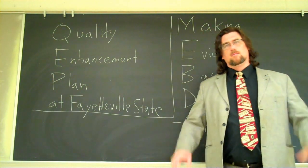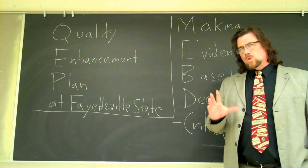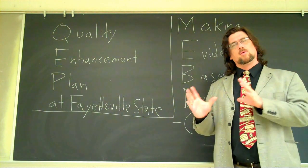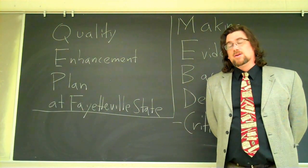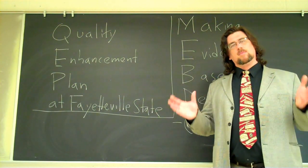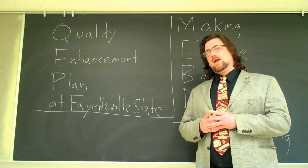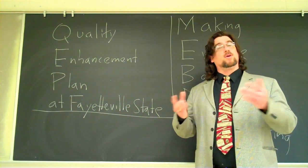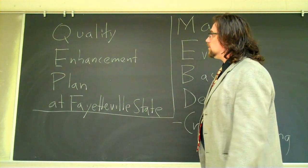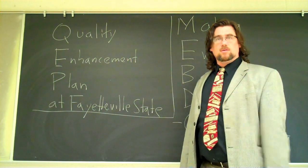I'm only going to go over some of the broad outlines of the Quality Enhancement Plan. We're currently undergoing what's called reaccreditation through SACS, which is our accreditation agency — an association of schools. They come in, they look over all the different aspects of Fayetteville State University, and then they determine what things we need to fix and what things we need to do in order to improve student learning. One of the recent things that's been added is you have to have a Quality Enhancement Plan, and that is designed to improve student learning.